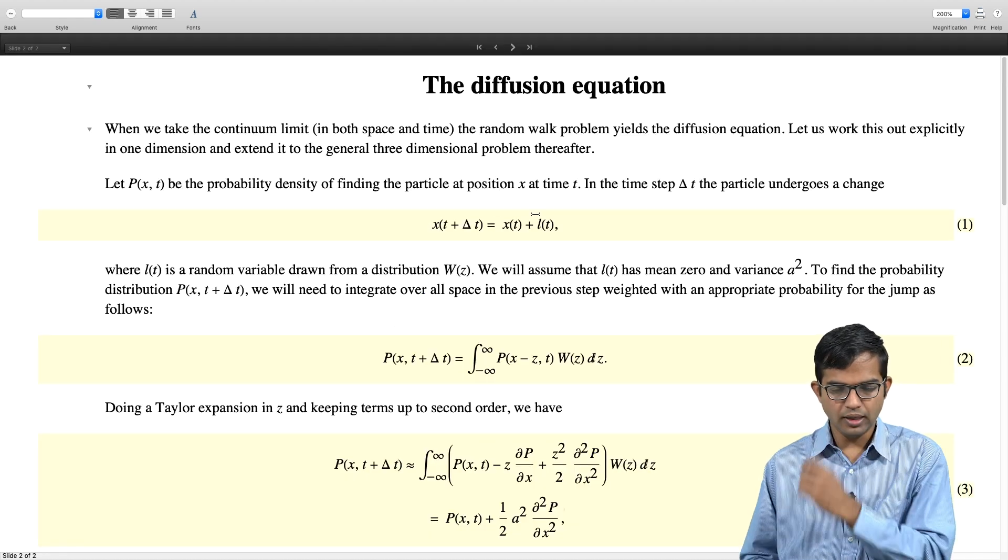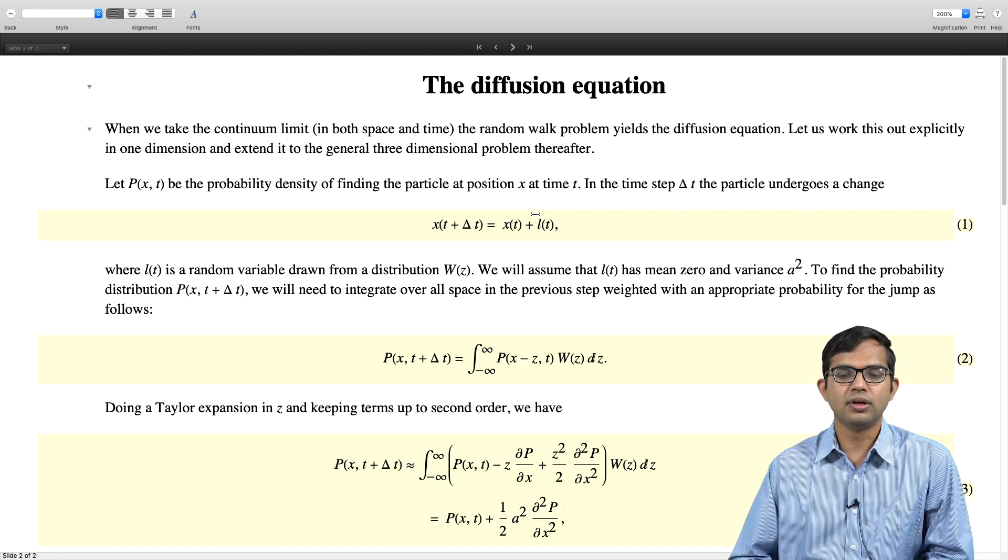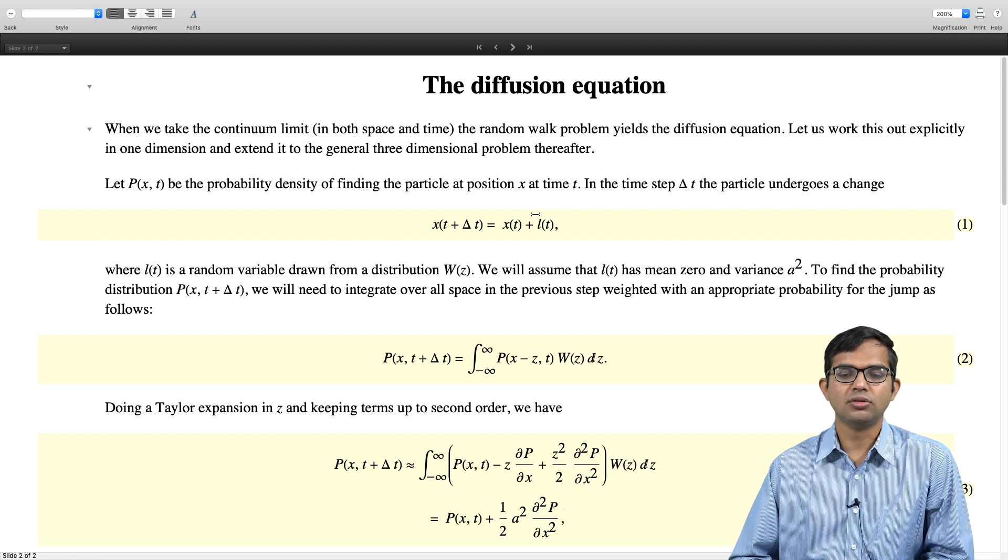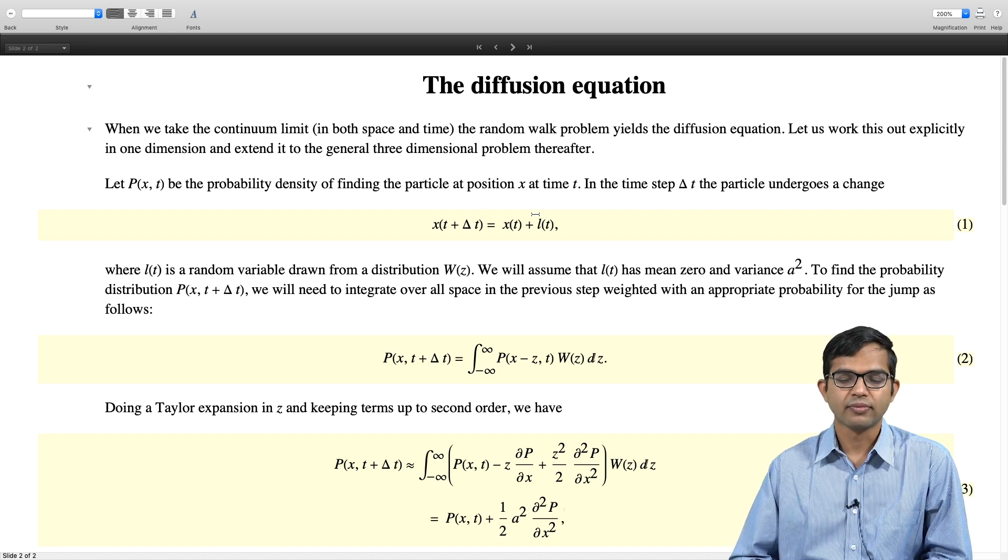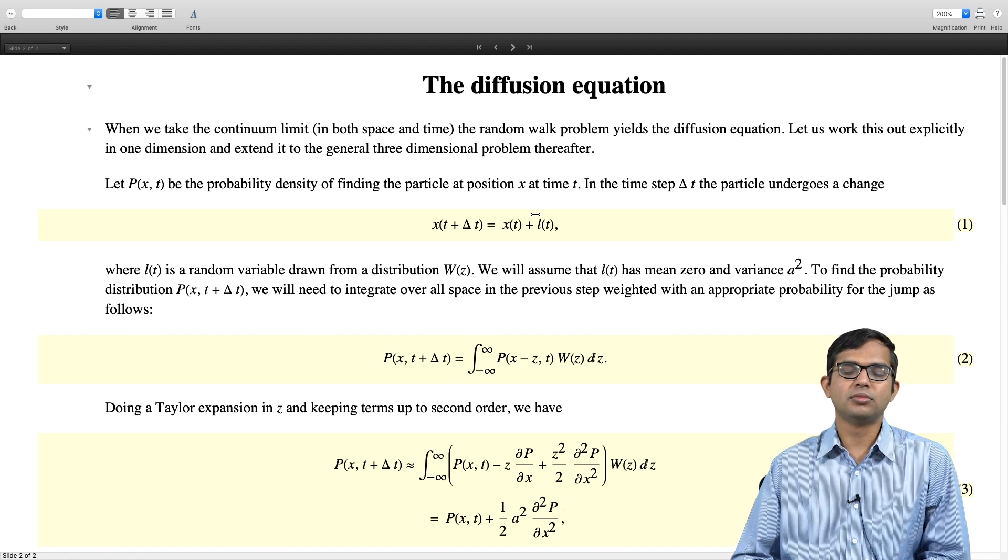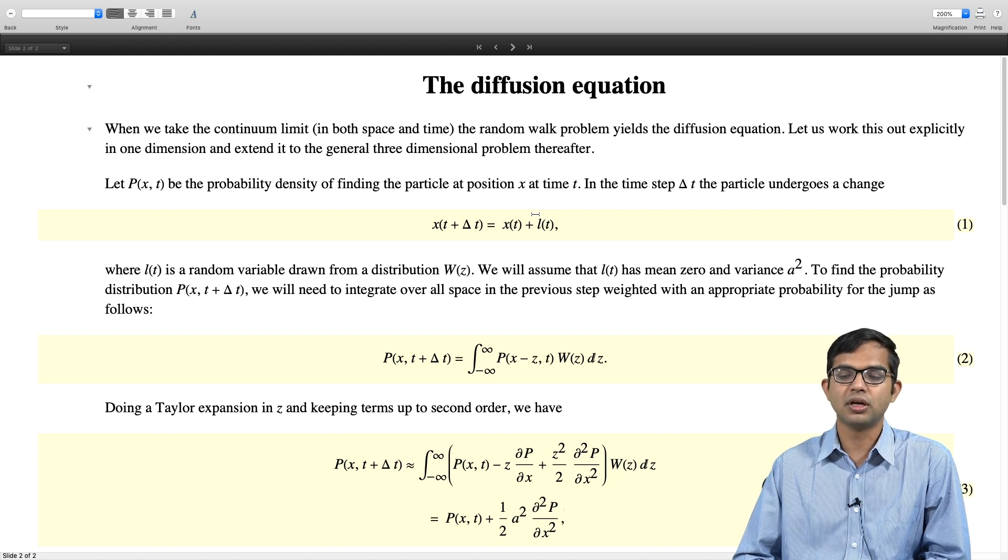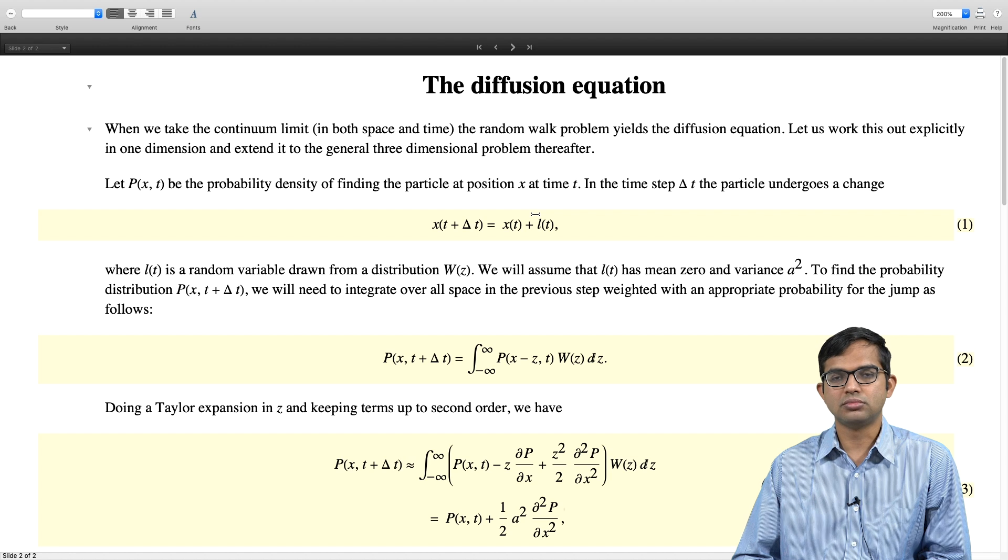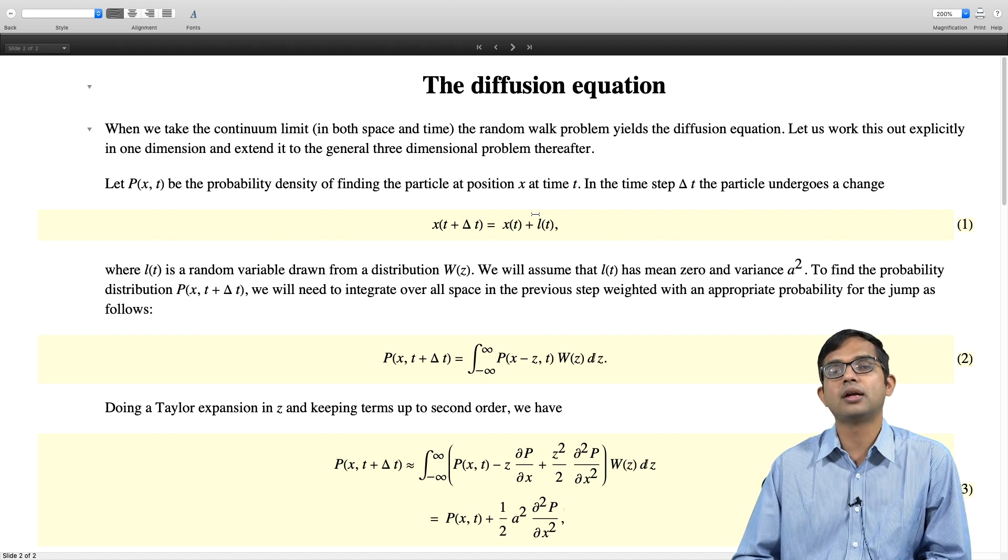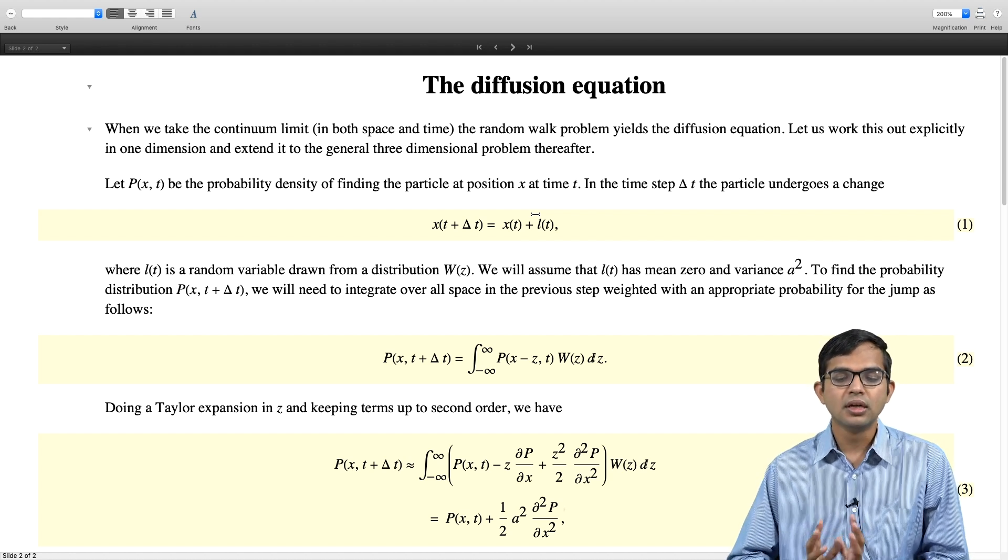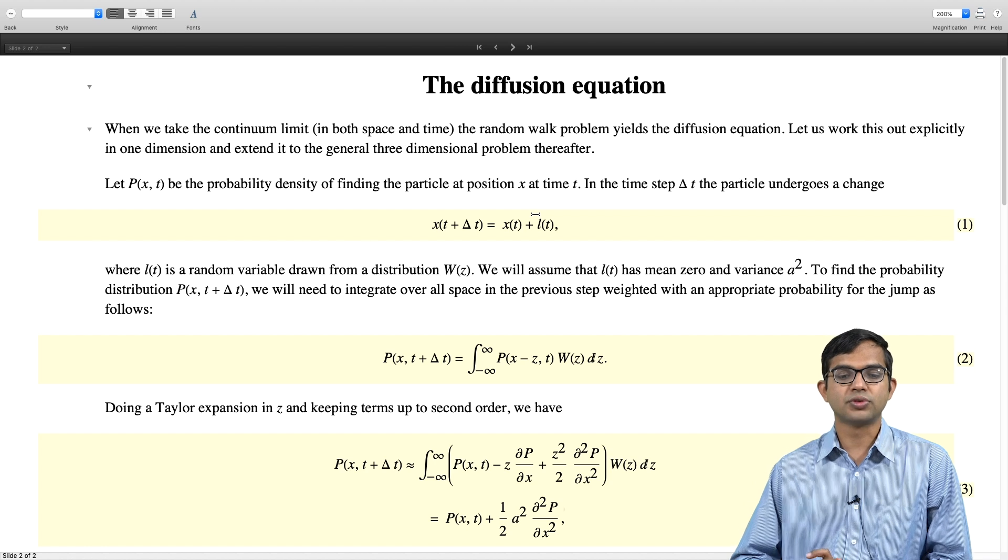How did we derive this? We said instead of having discrete motion, suppose your position could change continuously and let us allow time also to change continuously. So we allowed the amount by which your particle moves to the right or left to be a random variable L(t), which was known to have a certain mean which is 0 and variance a squared. That is all known about it and some distribution W(z), some reasonable distribution. We did not impose any special forms for this distribution.